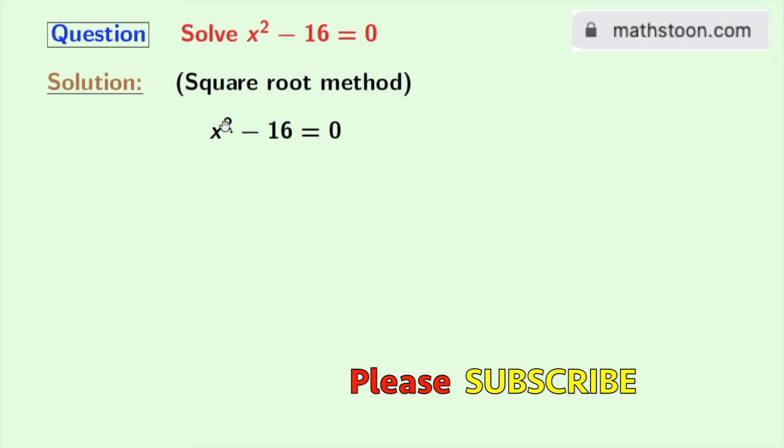This is our given equation. Shifting 16 to the right hand side we get x² = 16. 16 can also be written as 4². Now we will take square root on both sides.